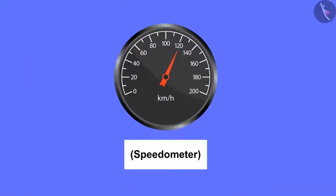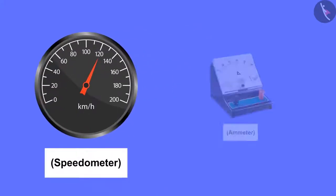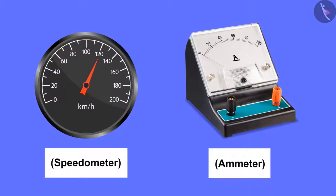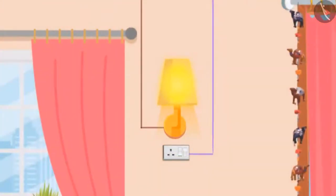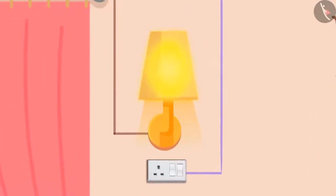Just as a speedometer is used to measure the speed of a vehicle, similarly in any circuit an instrument named an ammeter is used to measure the electric current. A similar type of circuit is present in our homes too, but here the positive and negative wires are not connected to a battery but are connected to the power supply coming into the house. We'll learn more closely about this in the upcoming videos.